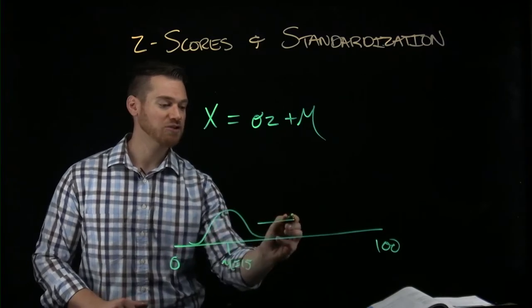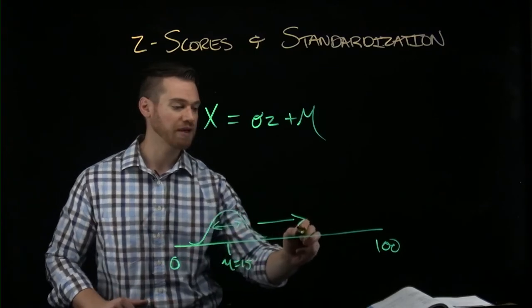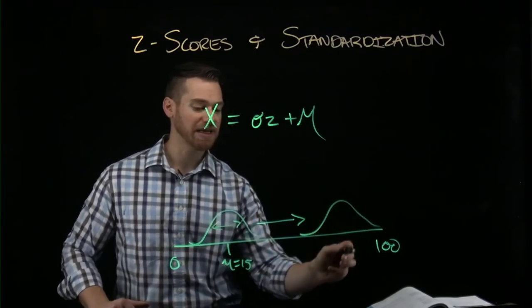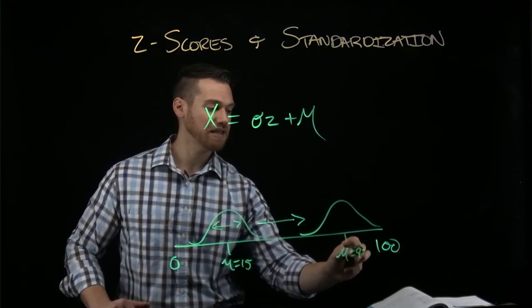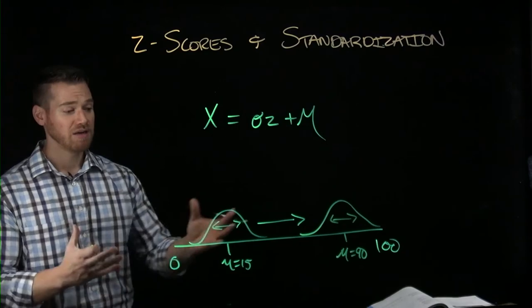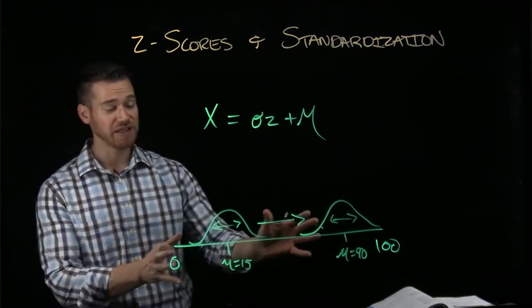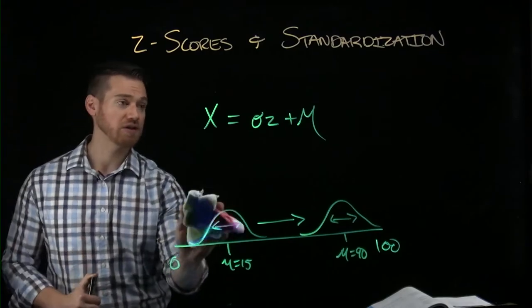We could take that distribution and we can slide it so it has the same spread, the same standard deviation and the same center point, but we slide that distribution down here. And now we've made it have a mean maybe of 90, right? And we can change the values without changing the distribution. It's just this idea of moving it along the scale.